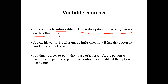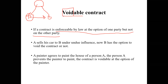When that contract goes to court, if person A was the victim of coercion without free consent, the court will ask person A whether he or she wants to declare the contract as a valid contract, or whether person A wants to make it void. So person A has the option to void it — that is why it is called voidable.